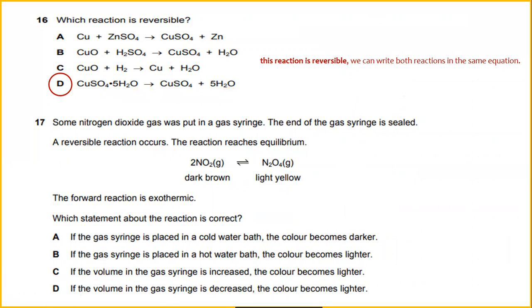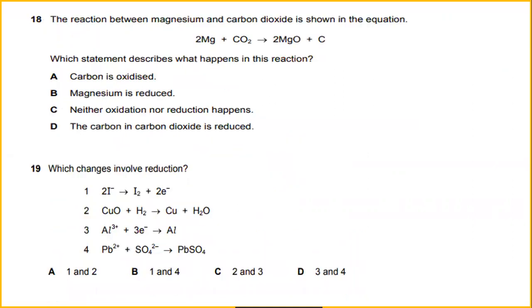Some nitrogen dioxide gas was put in a syringe. In a gas syringe, the end of the gas syringe is sealed. A reversible reaction occurs and the reaction reaches equilibrium. The forward reaction is exothermic, which statement about the reaction is correct? If the volume in the gas syringe is decreased, the color becomes lighter. The reactions between magnesium and carbon dioxide is shown in the equation. 2Mg plus CO2, which reacts to become 2MgO plus C. Which statement describes what happened in the reaction?